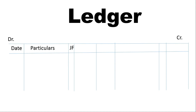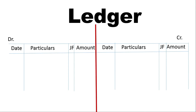We can write the amount in the amount column. This is the format. The ledger is separated — one is the left side and one is the right side, that is the debit side and the credit side.